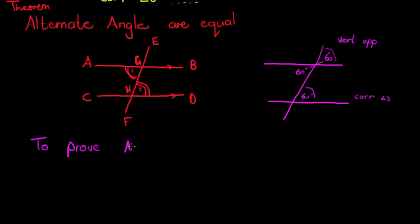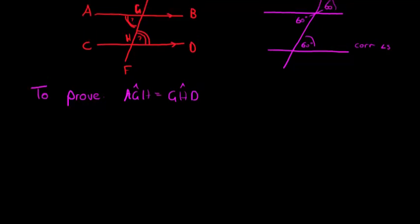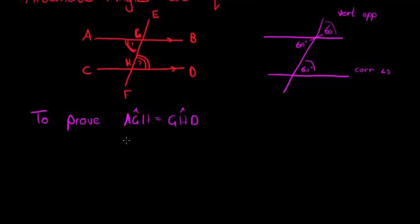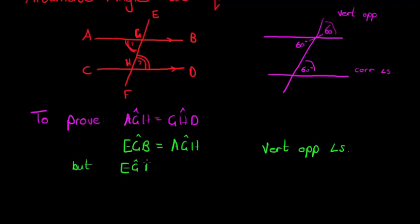We want to prove that AGH is equal to GHD. Okay, they're called alternating angles. And first we say, okay, we know that EGB is equal to GHD. Sorry, H, I suppose it doesn't matter. AGH. I would have written it the other way around. But I did it. Vertically opposite angles. And then I say, but EGB is also equal to GHD. Why? Corresponding angles.